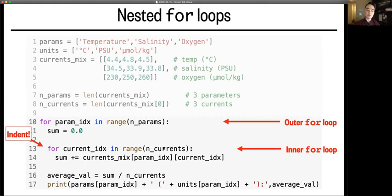And each time it will retrieve the measurement in currents_mix using this double bracket format, because if you remember the data is a list of lists. So first is the outer list variable of param_idx, and then the inner sub list variable of current_idx.